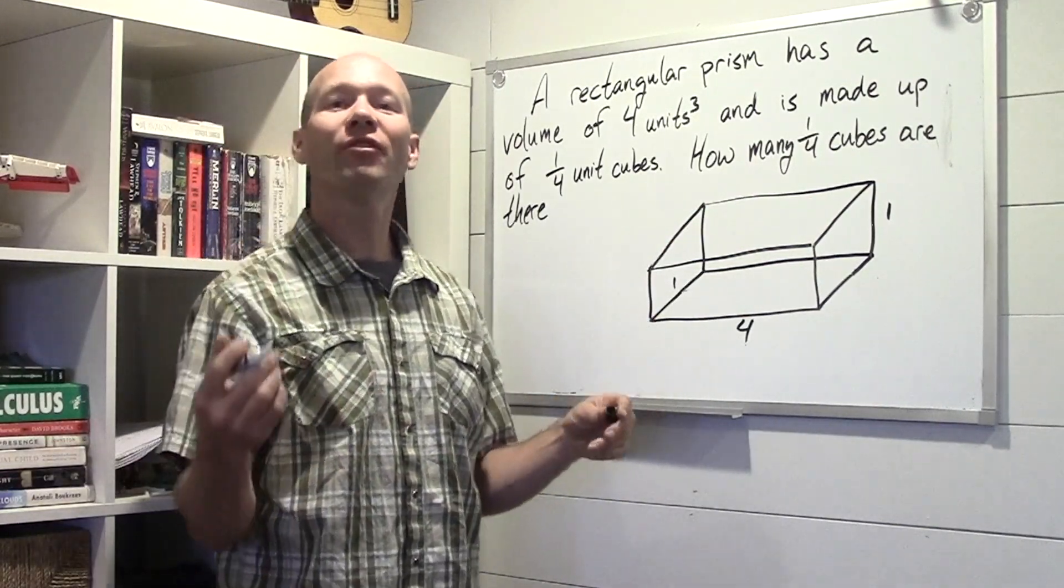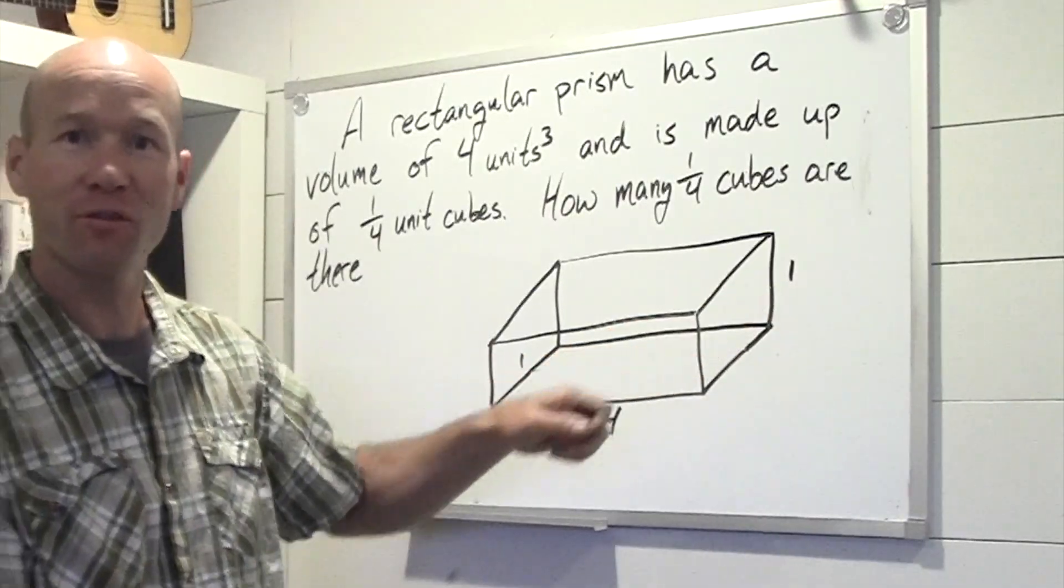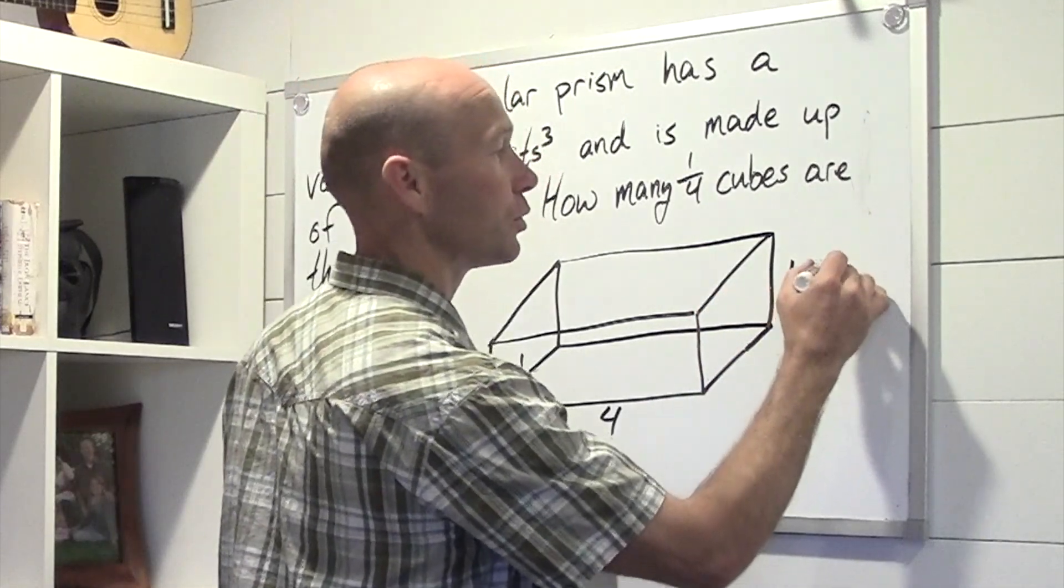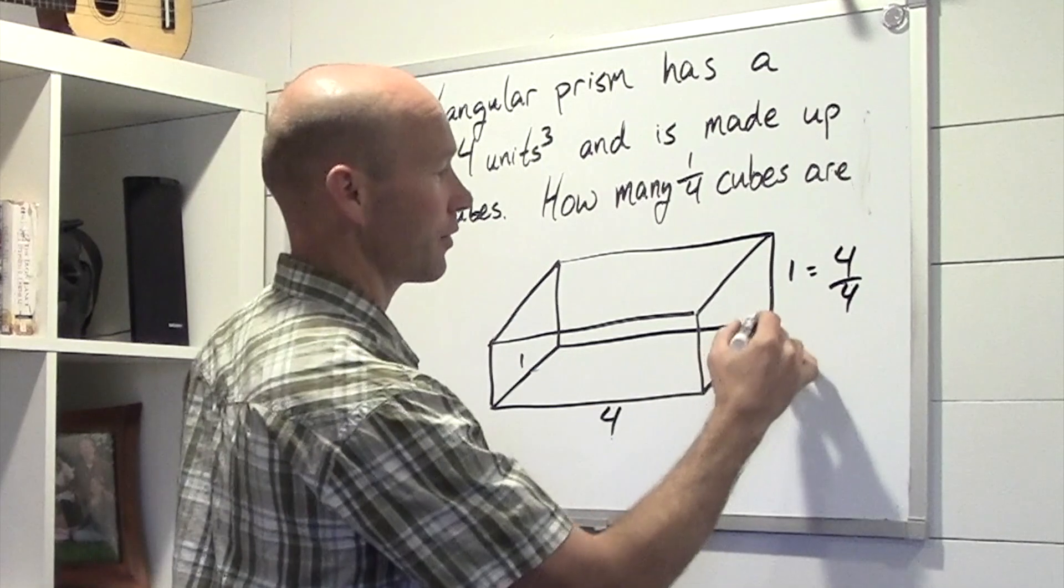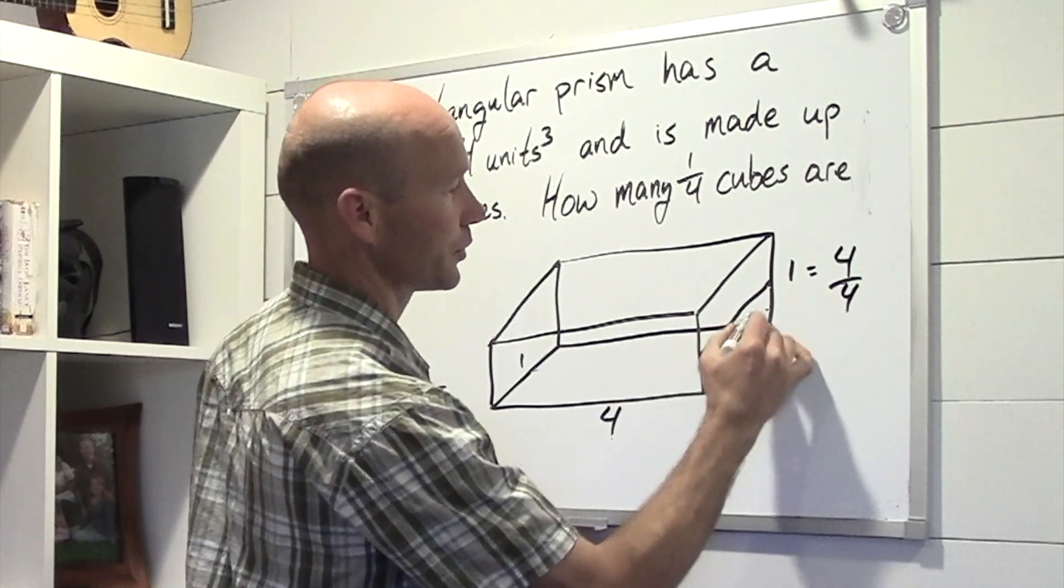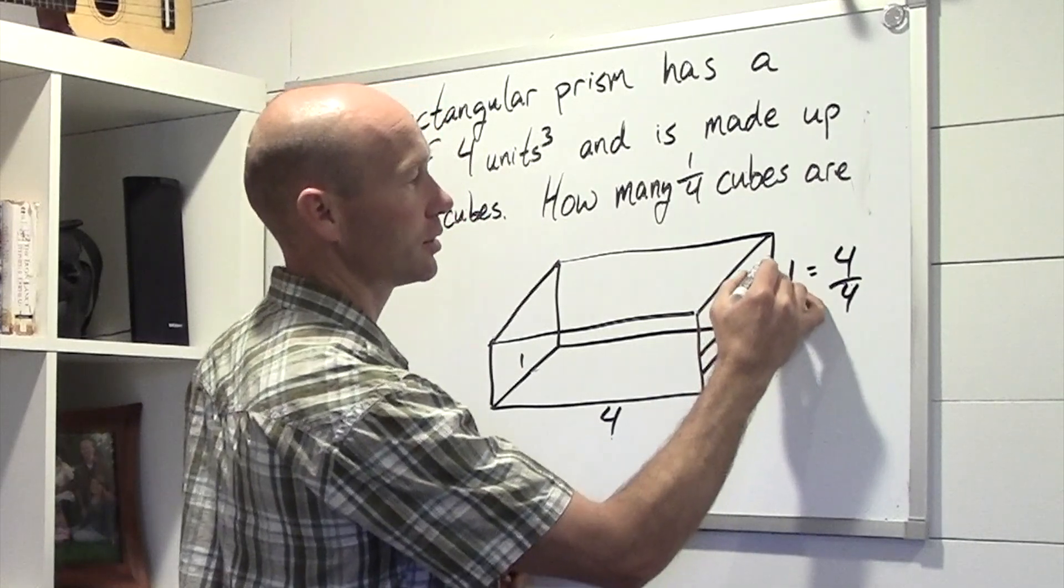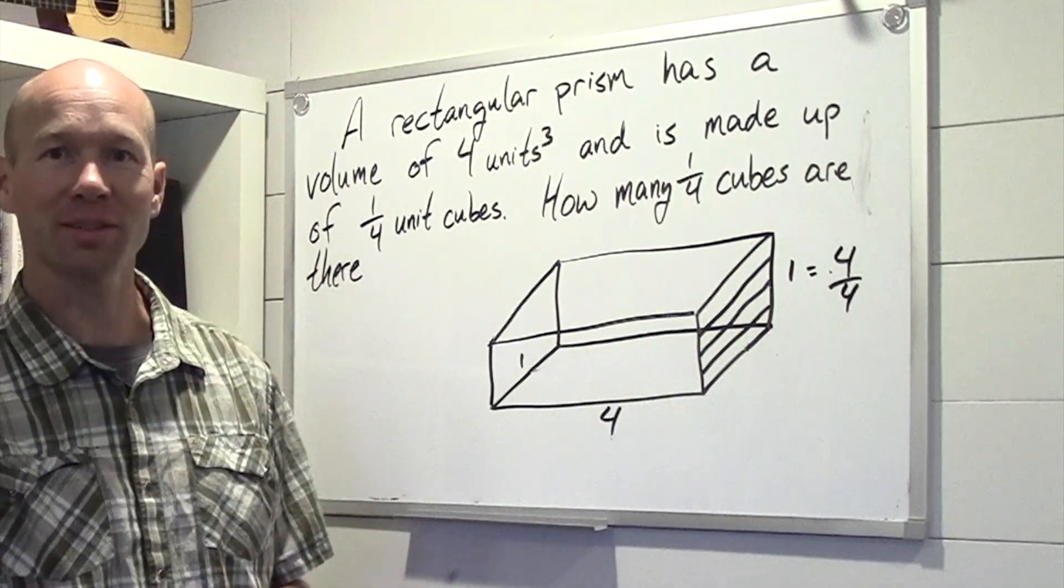Well, how many 1/4th units are in 1 whole? That's right, we have 4/4th units. 1 equals 4/4ths. So we'll split this in two and then split that into two pieces again. We have 4/4ths going across there.